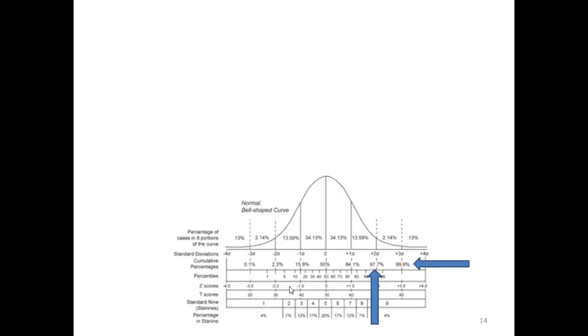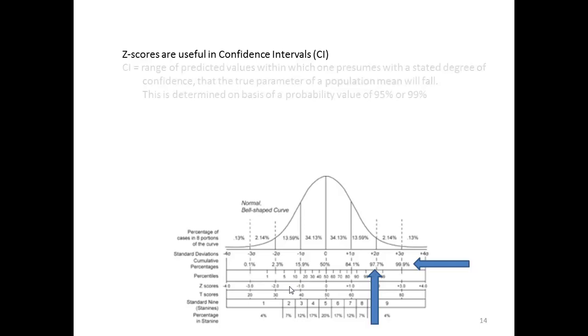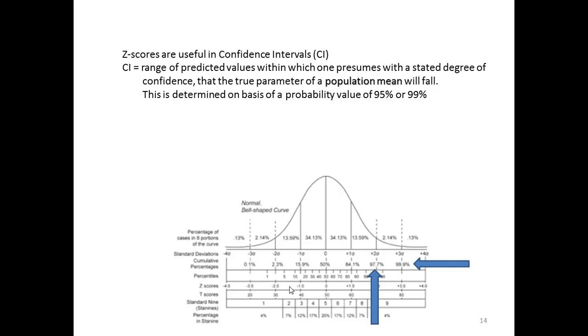One other thing about Z-scores. They are very useful in confidence interval calculations. What's a confidence interval? It's a range of predicted values within which one presumes with a stated degree of confidence that the true parameter of a population mean will fall. This is determined on the basis of a probability value of either 95 or 99%. What we want to know is how confident are we that our sample statistic we calculated would appear in the general population.